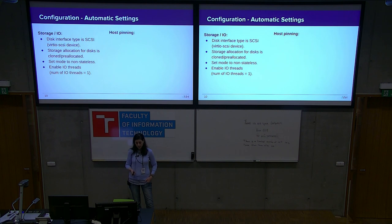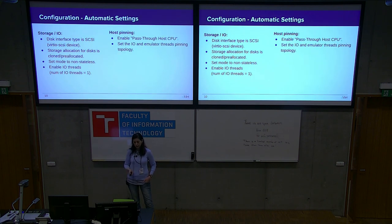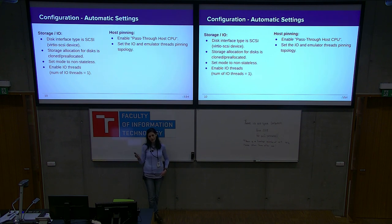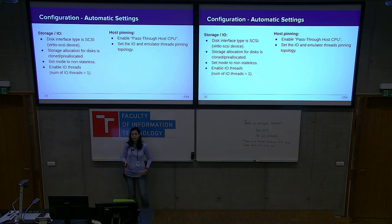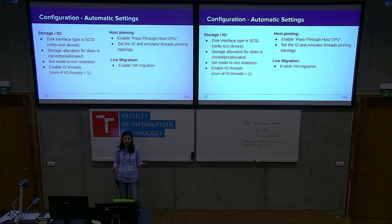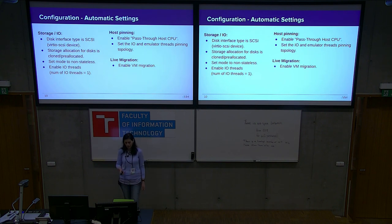In the CPU pinning area, we automatically do two things. We enable pass-through host CPU — meaning the CPU model and CPU flags the VM uses are exactly the same as the host the VM runs on, which increases performance. We also automatically enable and pin the I/O and emulator threads. And the last automatic setting is enabling live migration.